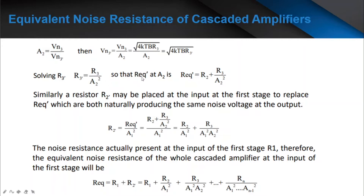So R_equivalent' at A2 is equal to R2 plus R3 over A2 squared. Similarly, a resistor R2 may be replaced at the input of the first stage by R_equivalent, both naturally producing the same noise voltage at the output. We can derive this formula. The noise resistance actually present at the input of the first stage is R1. Therefore, the equivalent noise resistance of the whole cascaded amplifier at the input of the first stage is R_equivalent = R1 + R2/A1² + R3/(A1²·A2²), and so on.